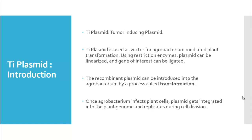Using restriction enzymes, the plasmid can be linearized and a gene of interest can be ligated. The recombinant plasmid can then be reintroduced into the Agrobacterium by a process called transformation. Once the Agrobacterium infects the plant cells, the plasmid gets integrated into the plant genome and replicates during cell division.